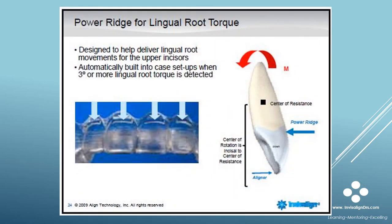Root torque is a common tooth movement in orthodontics. One use is to create the proper interincisal angle of anterior teeth — meaning to create the proper buccal-lingual inclination. When anterior root torque occurs, the root apices are repositioned either labially or lingually, and the incisal edges are not repositioned.